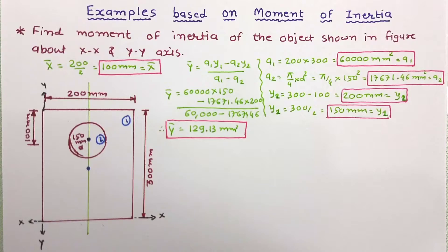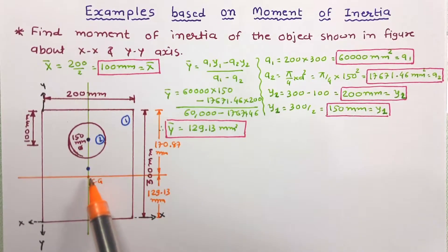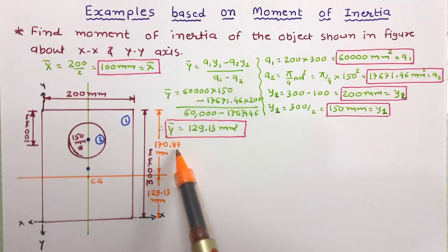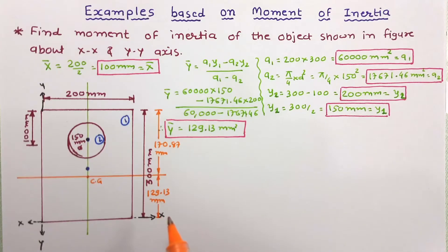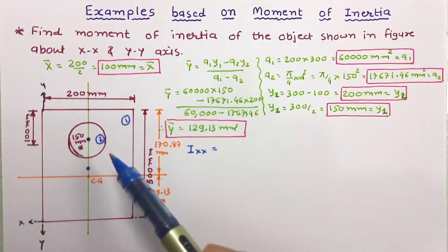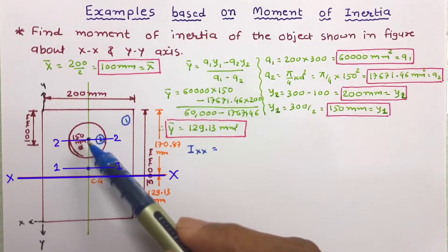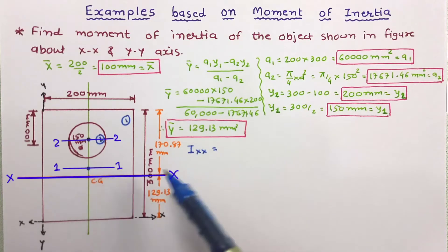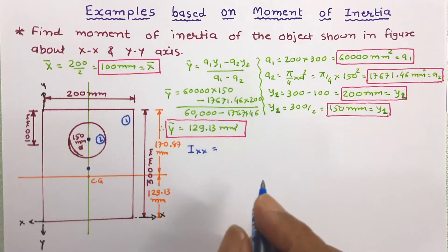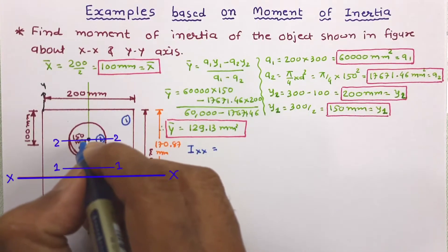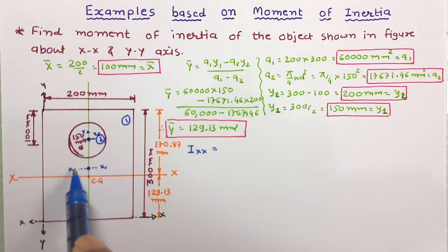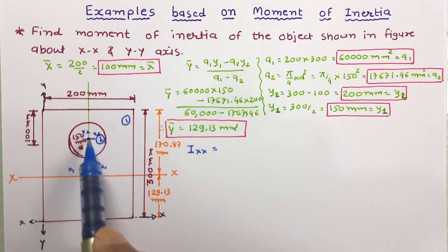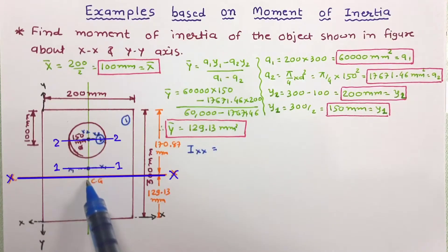Let us mark the centroid in the figure. This point is the centroid of the complete figure, which is at 129.13 mm from the bottom and 170.87 mm from the top. Now let us work out the moment of inertia about the xx axis. We check the positions of the centroids of all component parts. Since the centroidal axes of the parts are not coincident with the figure's centroidal axis, we need to use the parallel axis theorem and transfer to the xx axis.